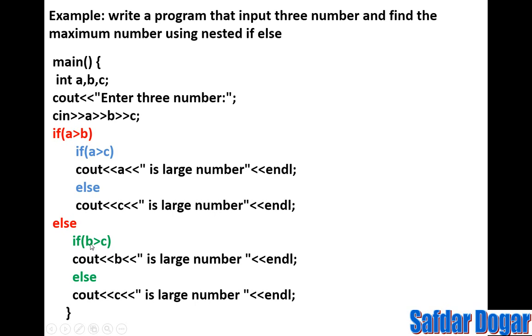But if A is not greater than B, we go to the outer else. At that point A is eliminated and the remaining numbers are B and C. If B is greater than C, then B is the largest number. If B is not greater than C, then C is the largest number.